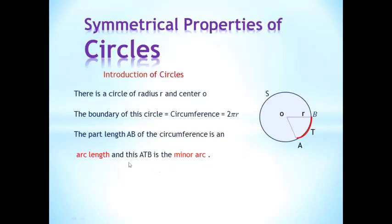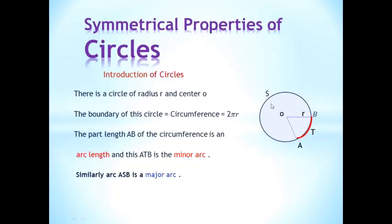So, this ATB arc is the minor arc. Similarly, this ASB will be the major arc. So keep this thing in mind: the minor arc and the major arc.